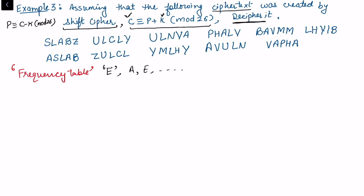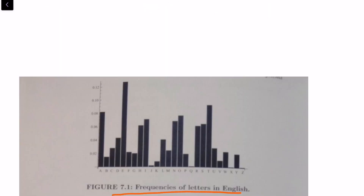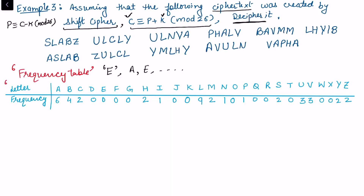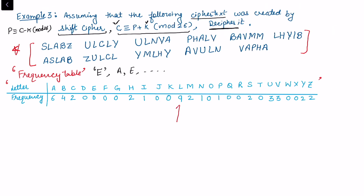The frequency table tells us which letters appear most often in English text. The letter E appears most frequently, followed by A, then T, and so on. We compare the frequency of letters in our cipher text with this standard table. Counting our cipher text, we find that L appears most often — 9 times — making it the most frequent letter.